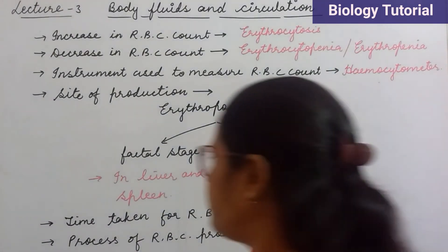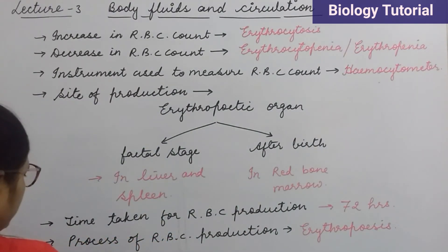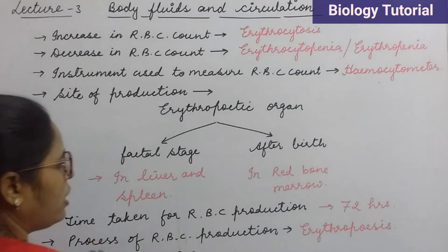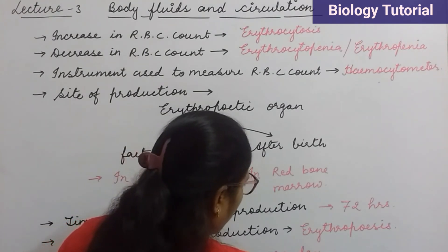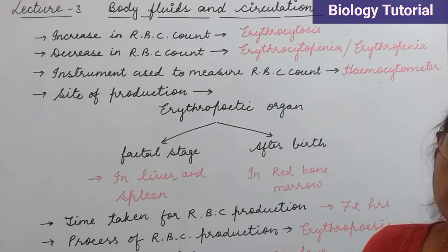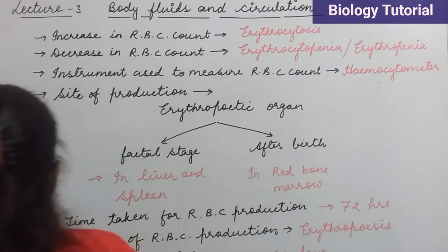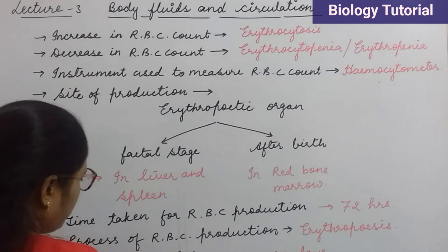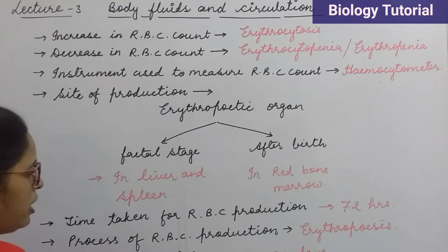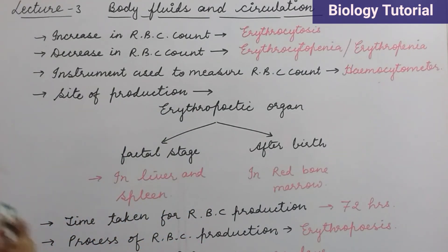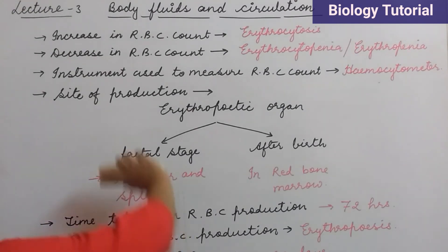The lifespan of RBC is about 120 days — this is a very important fact and a common exam question. After 120 days the RBC dies. The organ where RBCs die is called the graveyard of RBC, which is the spleen. Interestingly, in the fetal stage the spleen is also a site of RBC production, and after birth it serves as the graveyard of RBC.